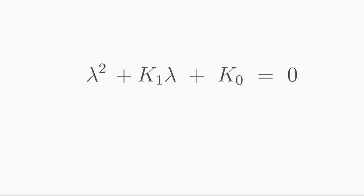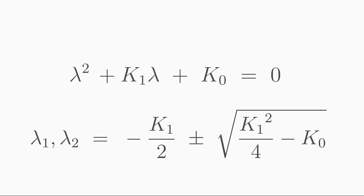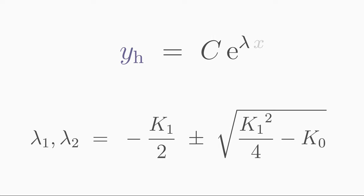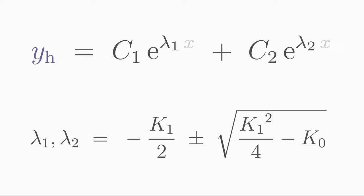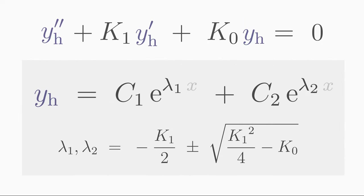A quadratic equation has two solutions, lambda 1 and lambda 2, and you can determine these, for example, with the quadratic formula. Since you get two lambda values, you have to extend the exponential ansatz by another term in which the second lambda value is in the exponent. With the corresponding lambda values, this gives the solution of the homogeneous differential equation of second order.